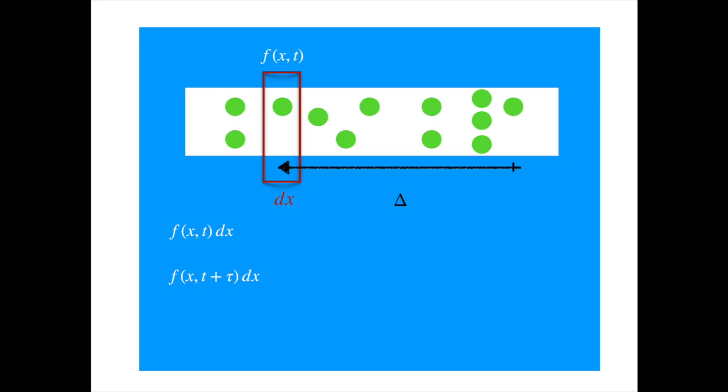We can represent the number of particles by the same symbols. So we now have x plus delta as the first argument, because the point is delta away from x, and the total number of particles in this new enclosed area will again be just the value of f at the new location times dx.